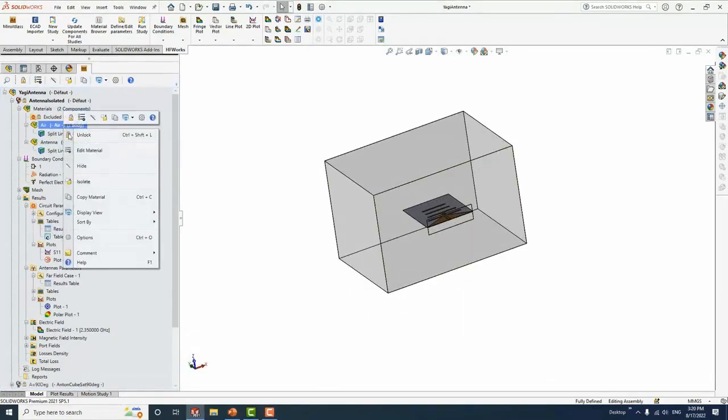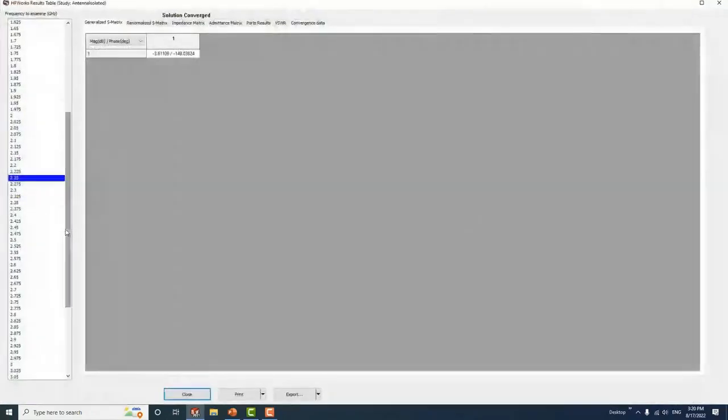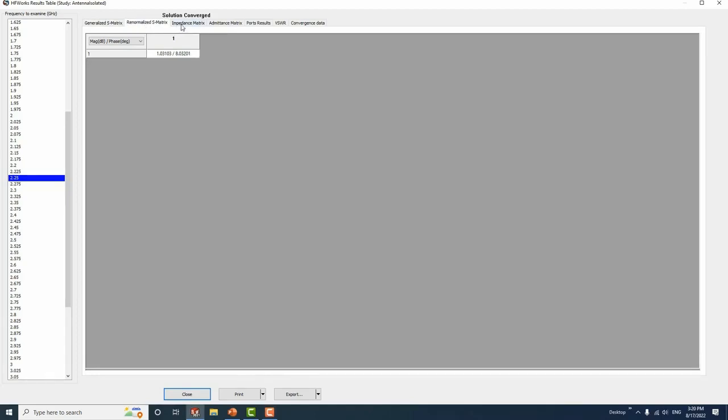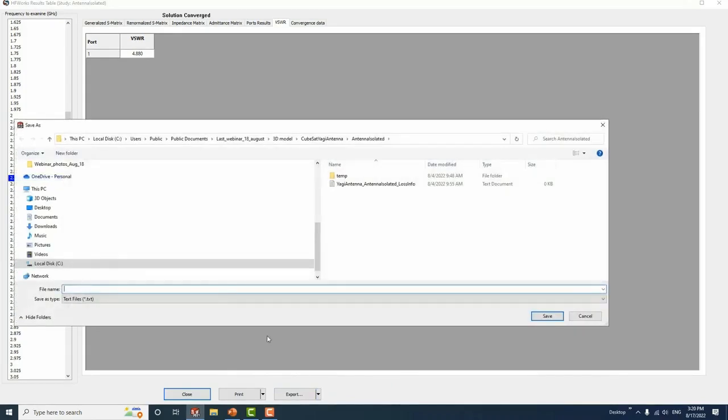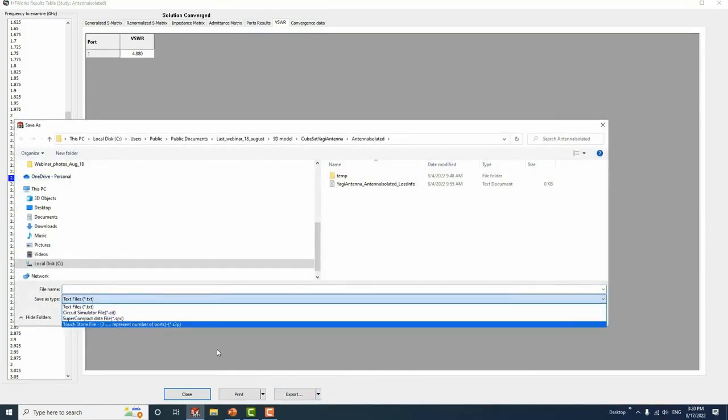In HFWorks we have what we call the results table. Under this table we can see different circuit parameters such as S-parameters, renormalized S-parameters, impedance matrix, admittance, port results, and VSWR. We can also plot versus current or frequencies. Also we can export results to different formats such as text file, CITIFILE, SPICE, or Touchstone.